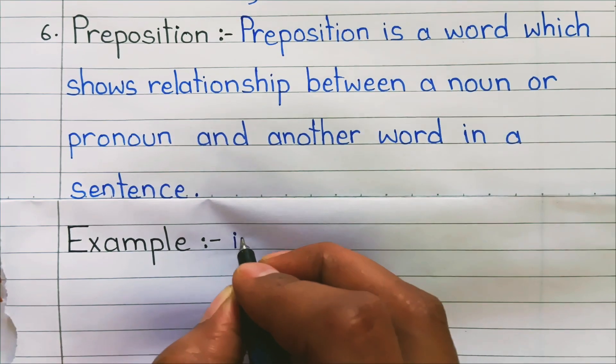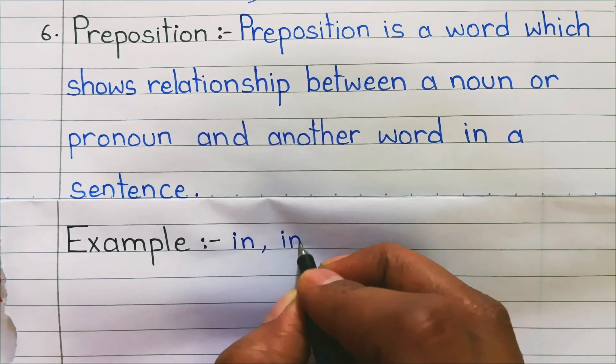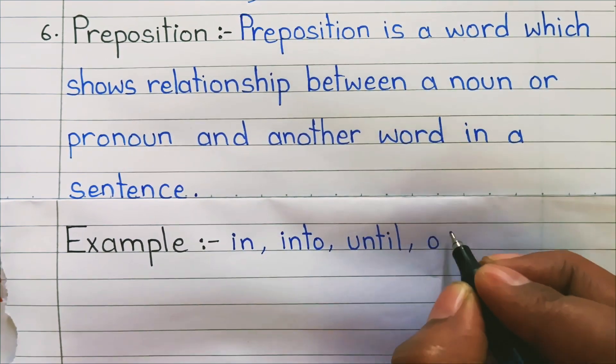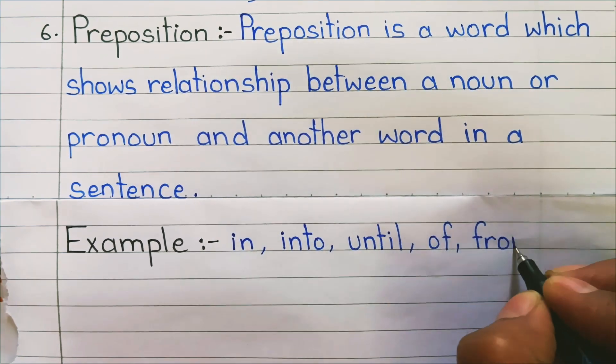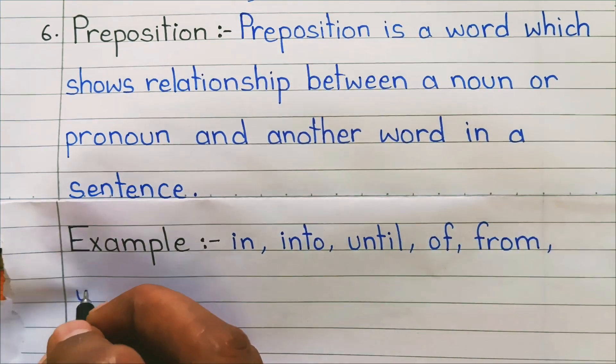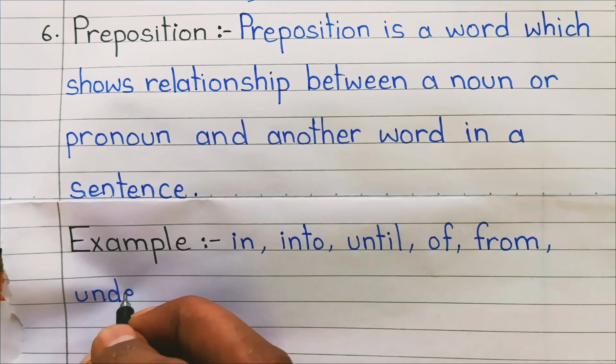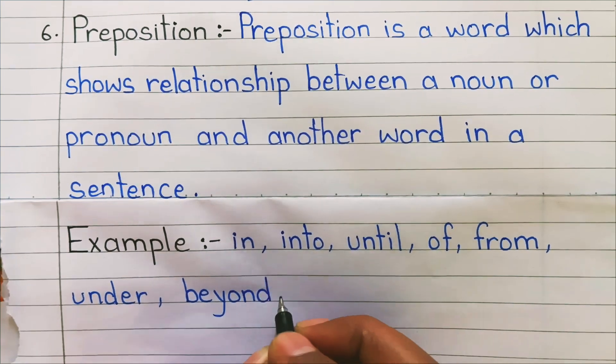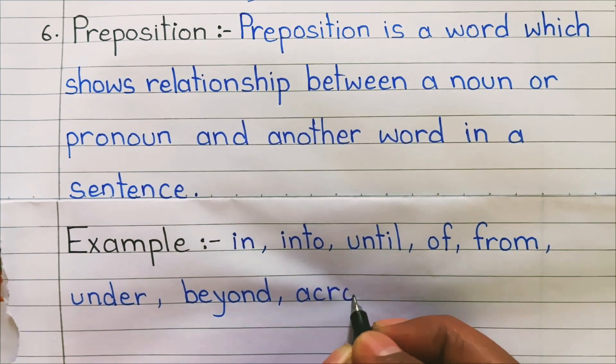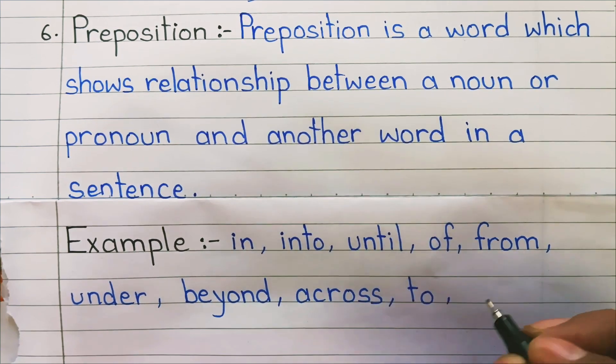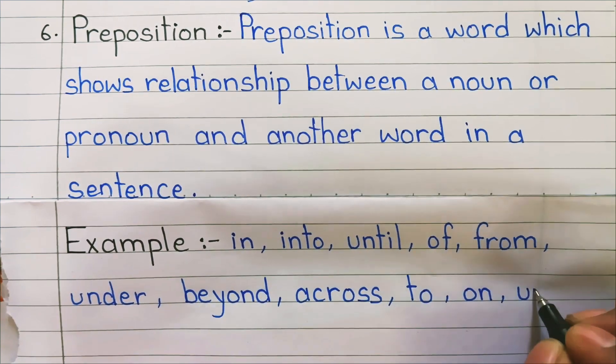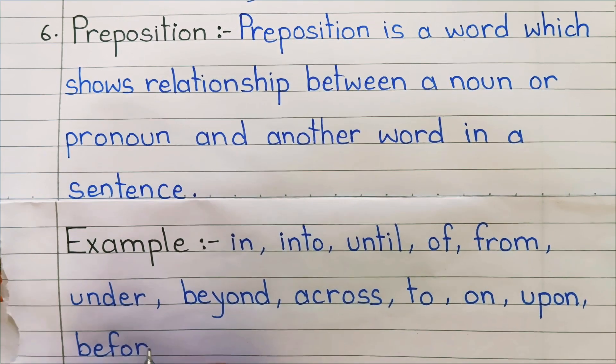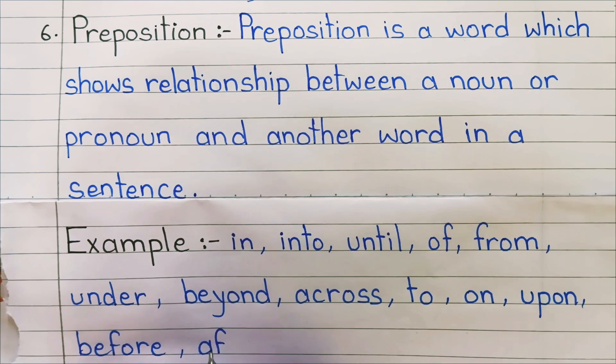6. Preposition: Preposition is a word which shows relationship between a noun or pronoun and another word in a sentence. Examples: in, into, until, of, from, under, beyond, across, to, on, upon, before, after, etc.